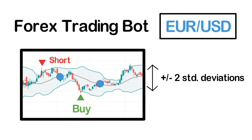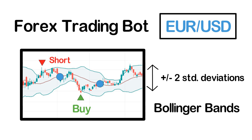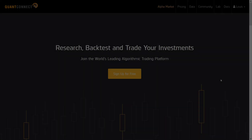Luckily, we won't have to implement this logic manually since there already is a ready-to-use indicator that does exactly what I just described. This indicator is known as the Bollinger Bands indicator. To better understand our algorithm, we will plot the Bollinger Band indicator as well as mark the points where the algorithm opened and closed positions on a custom chart. With that said, let us now head over to QuantConnect and start writing the actual code for this trading bot.